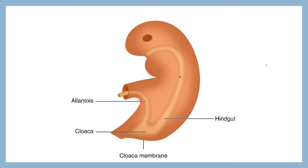This pre-allantoic part is involved in the formation of the distal third of the transverse colon, descending colon, and sigmoid colon. The post-allantoic part is going to form the rectum and the upper part of the anal canal. Below that, an extension of a membrane can be seen — that is the cloacal membrane.